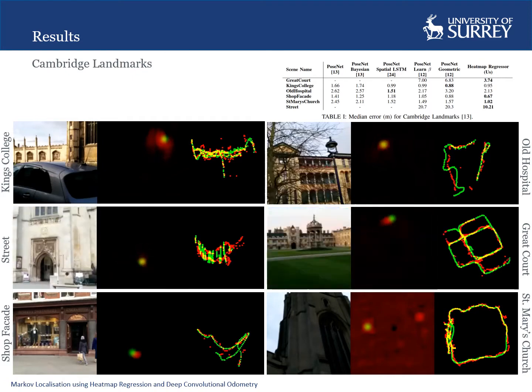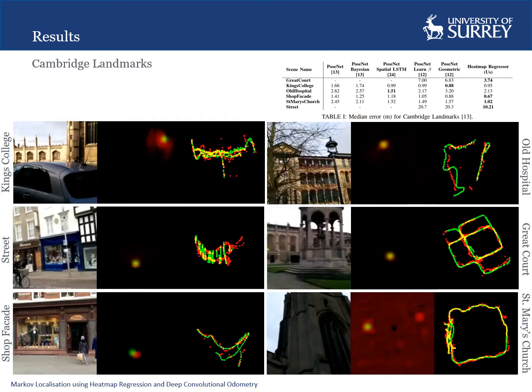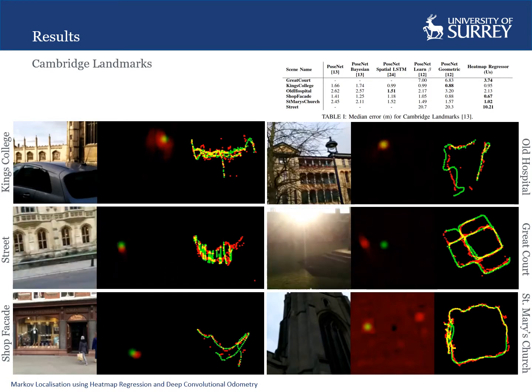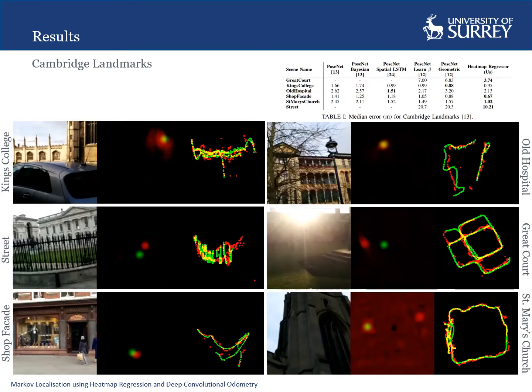We also see that qualitatively, our model is able to regress the pose of each image along with the heatmap for its confidence. Note how the heatmap can effectively deal with multiple hypotheses.